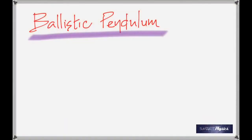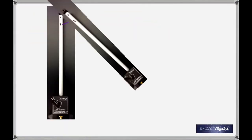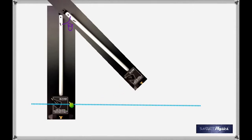In this lab, we fired the ball into the pendulum and the pendulum went up. What we're trying to find is how much the center of mass was lifted. The center of mass is here initially, and now the center of mass is somewhere up here. We're trying to find this height using the angle.